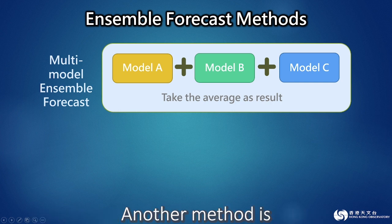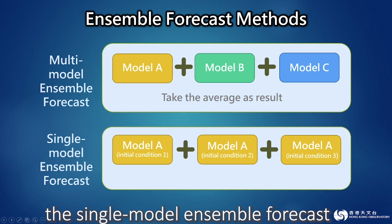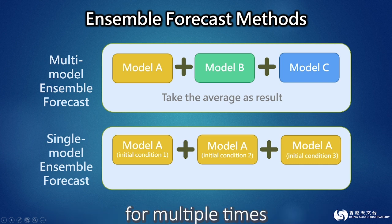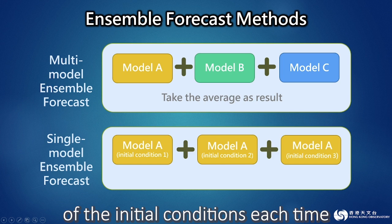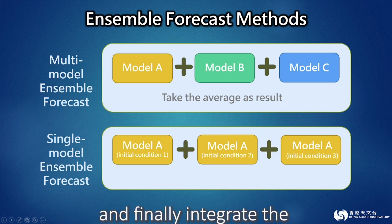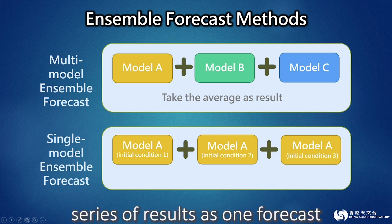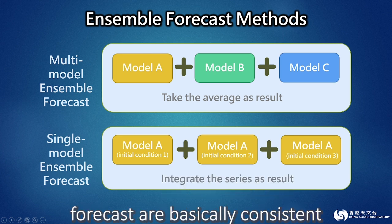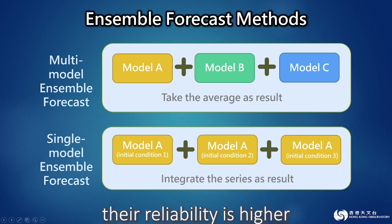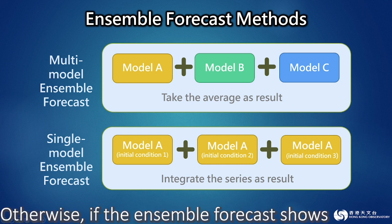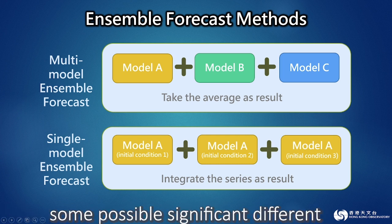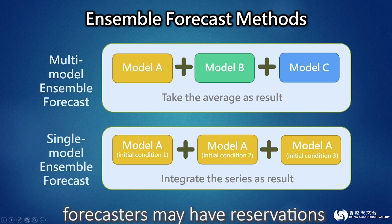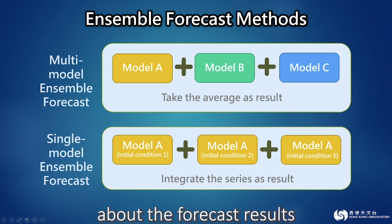Another method is the single model ensemble forecast. That method runs the same model multiple times, with a slight change of the initial conditions each time, and finally integrates the series of results as one forecast. If the results of the ensemble forecast are basically consistent, the reliability is higher. Otherwise, if the ensemble forecast shows some possible significant different weather scenarios, forecasters may have reservations about the forecast results.